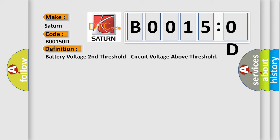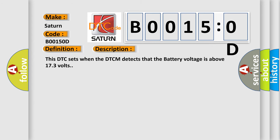Now this is a short description of this DTC code. This DTC sets when the DTM detects that the battery voltage is above 17.3 volts.